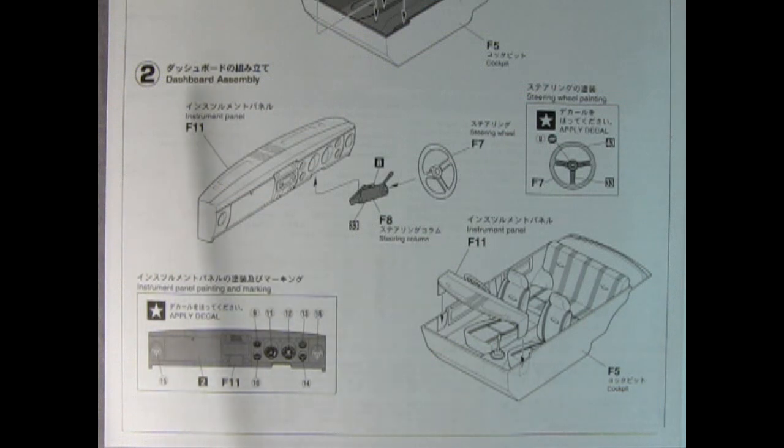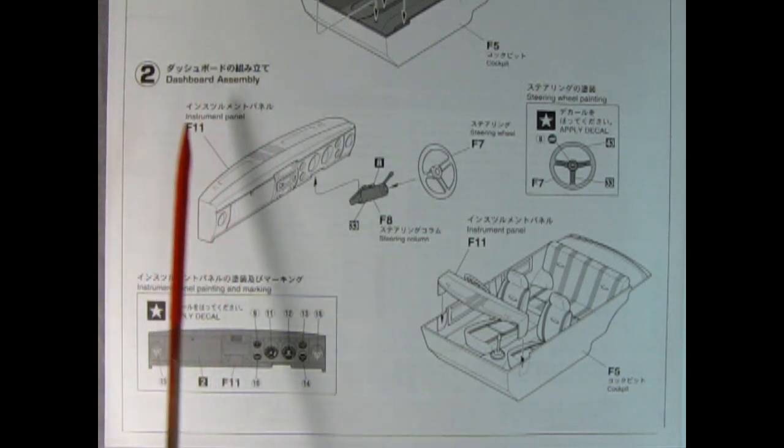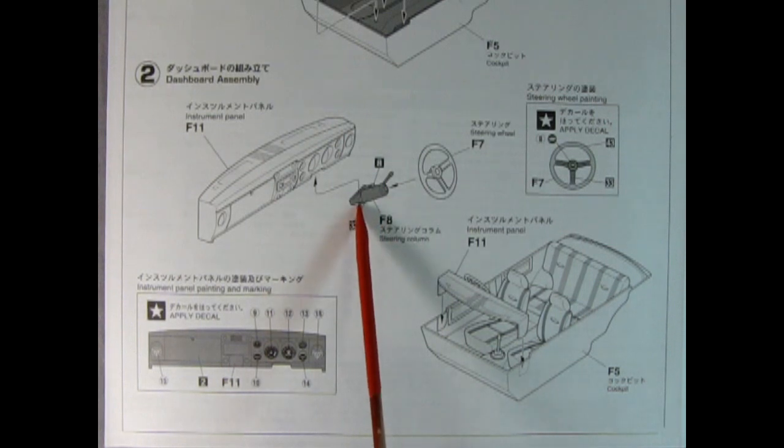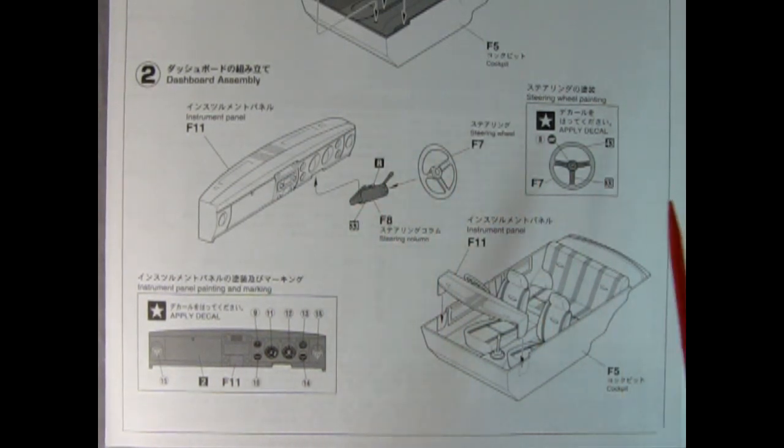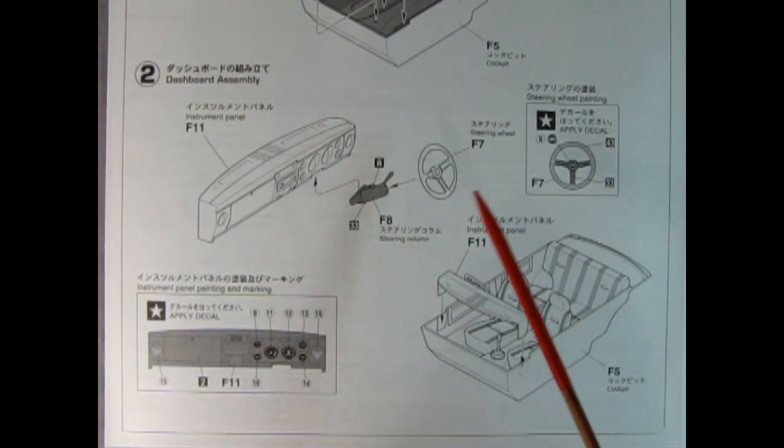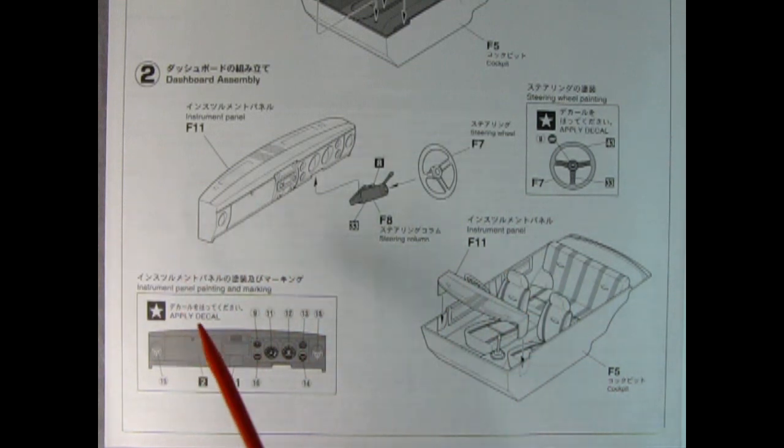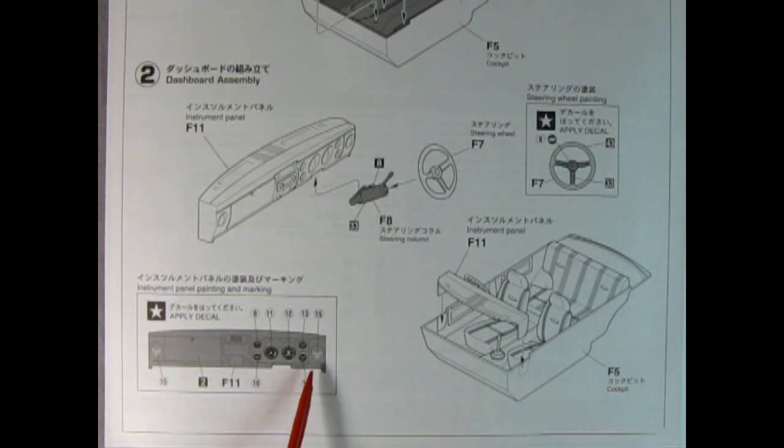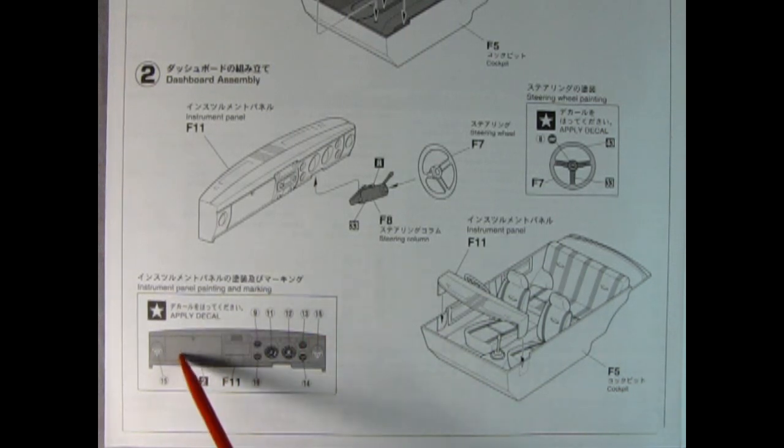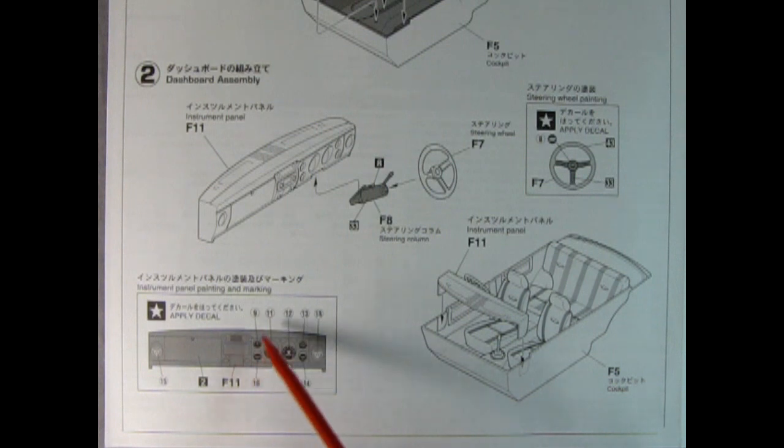So as we get into step two we see our dashboard assembly going in here with our dashboard, our steering column, and our steering wheel. We also have some more decal application here. So going down on the dashboard we have these decals number 15 for the vents left and right. We also have a color for our dashboard and then here we have decal 9, decal 10, 11, 12, 13 and 14. And that will really spruce up your dashboard.